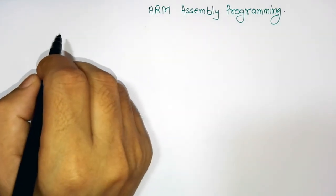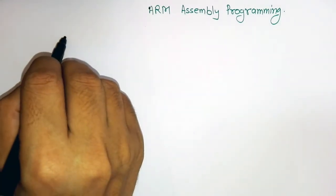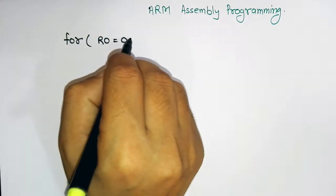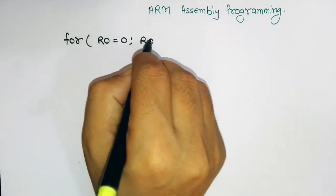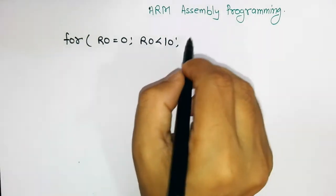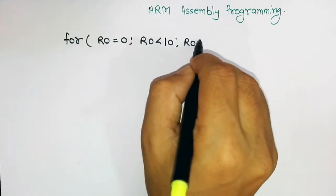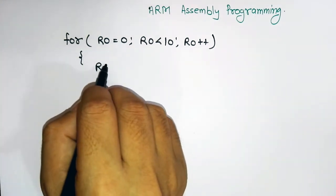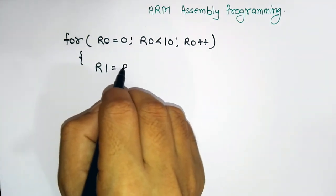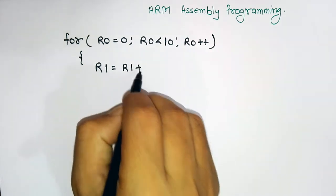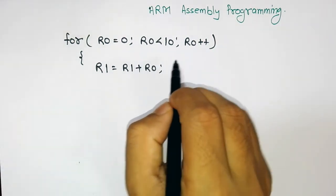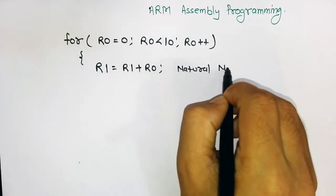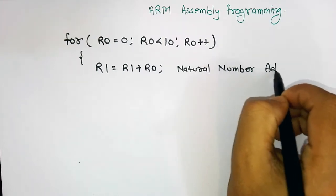Let's start with the first example: a simple for loop. Suppose you have a for loop where R0 is equal to 0, R0 is less than 10, and R0 plus plus. You are adding this natural number into R1, that is R1 is equal to R1 plus R0. So it is a simple natural number addition.